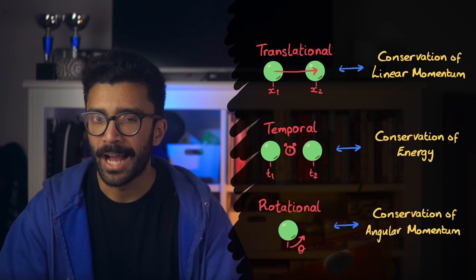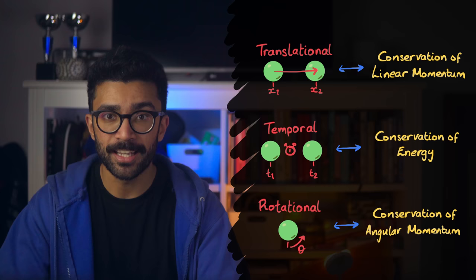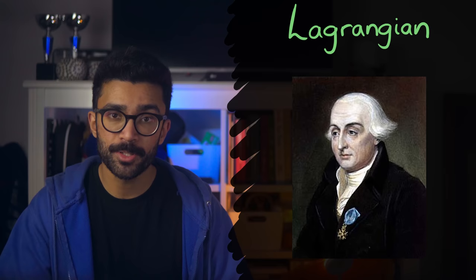So, how can we understand this link between symmetries and conservation laws? Well, the most convenient way to do this is to take a look at some rather interesting maths. First of all, we're going to define a quantity called the Lagrangian. Named after Joseph-Louis Lagrange, it's very simple.